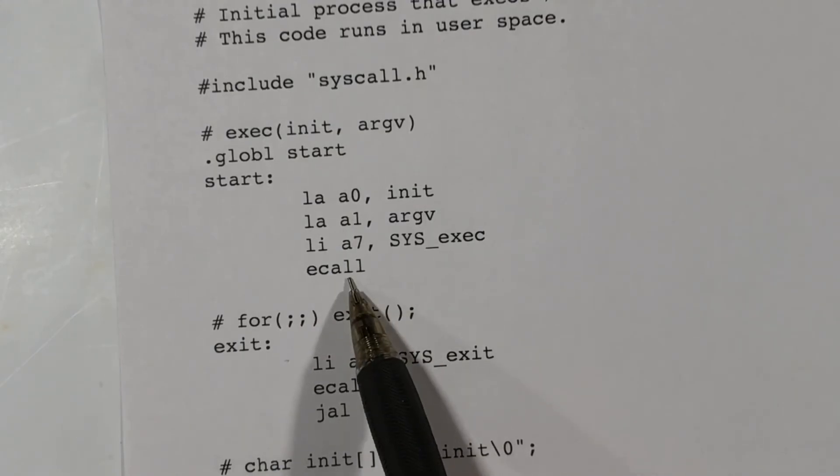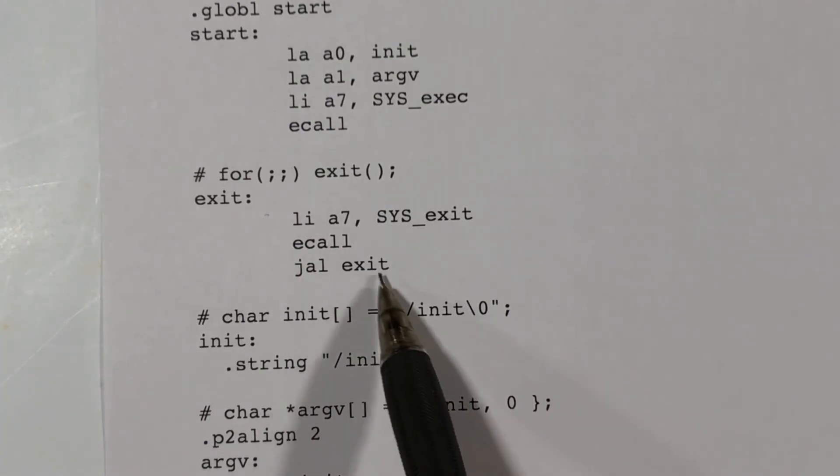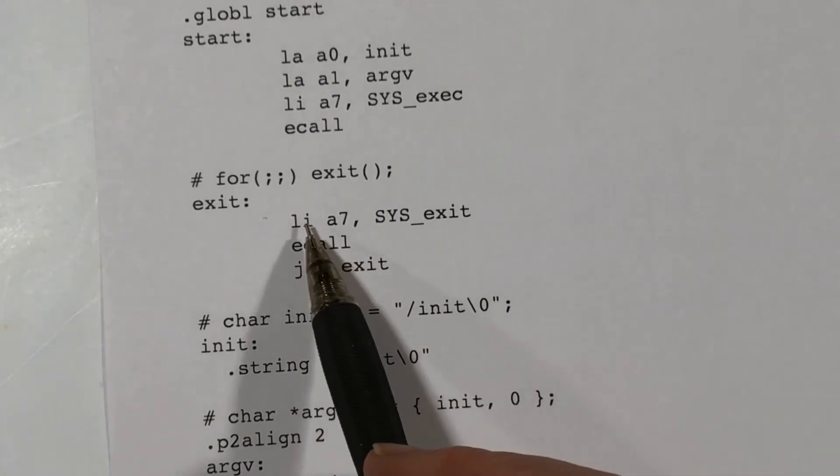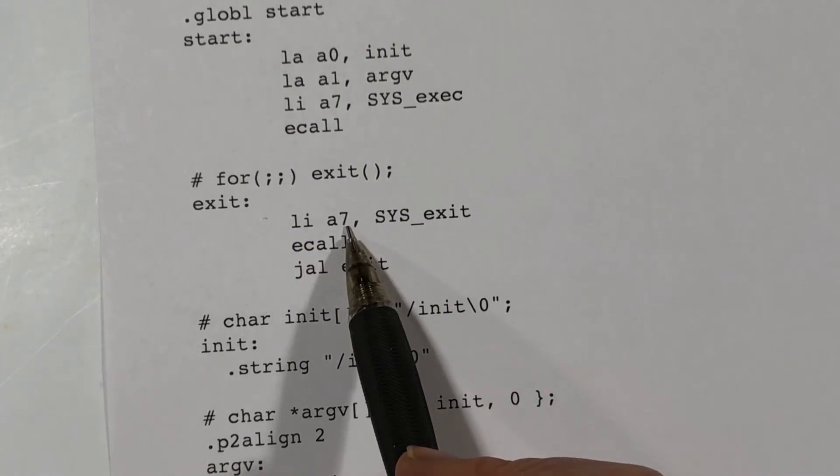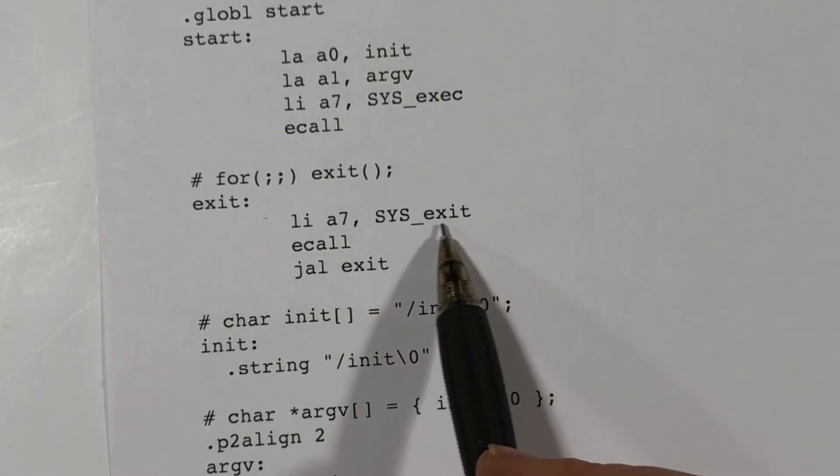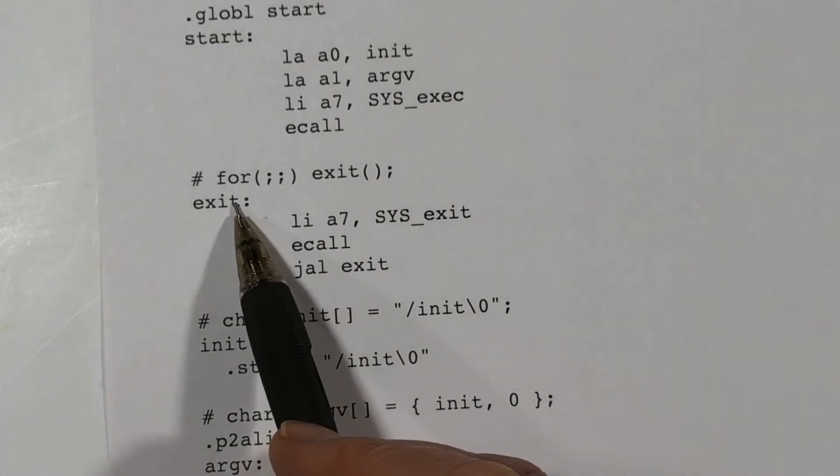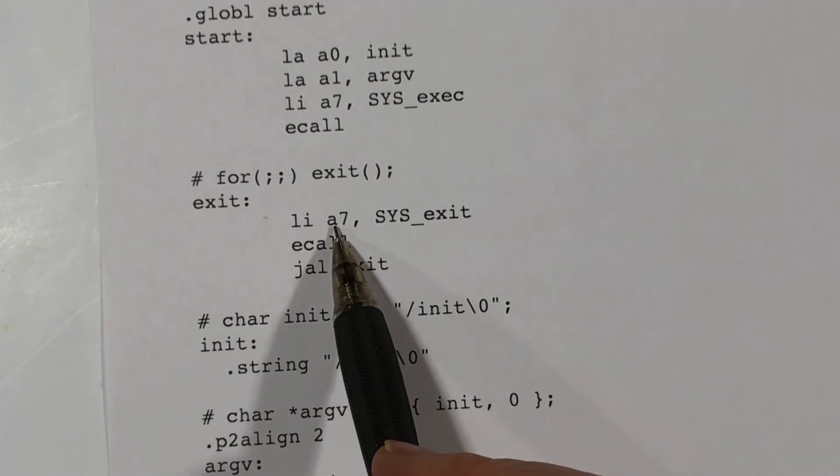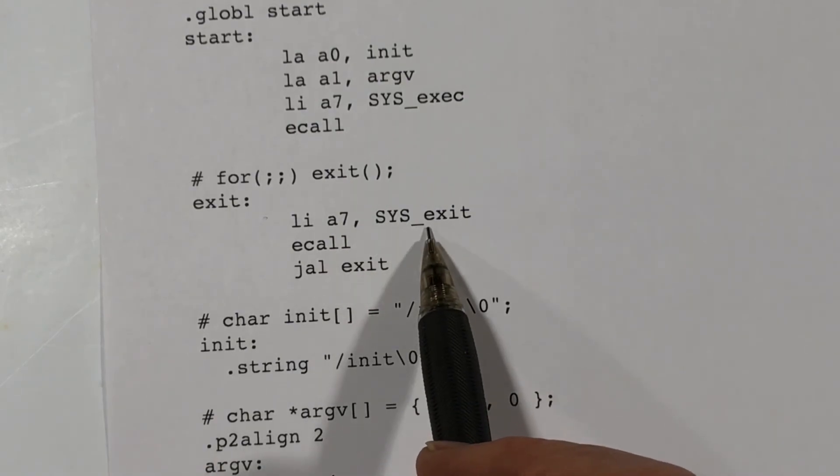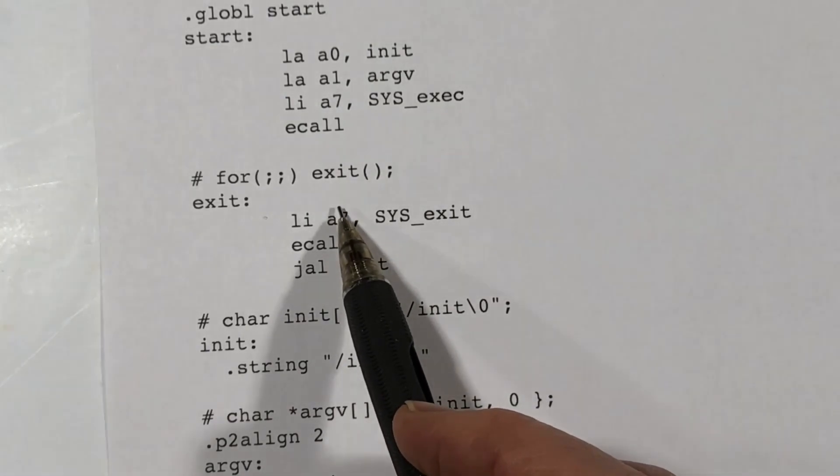And then if that should return, we then have the code to call the exit system call. We load into A7 the code number, which was two, for the exit system call, and then we perform the system call. And if that should return, we just jump here and keep repeating it. Exit happens to take a parameter. It takes a single argument, which is the exit code, or return code. We don't even bother to load A0 with anything, so who knows what it would actually be.